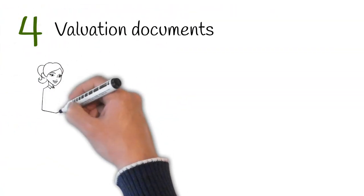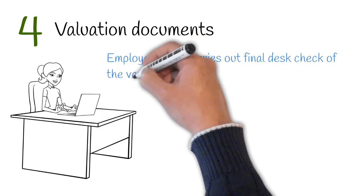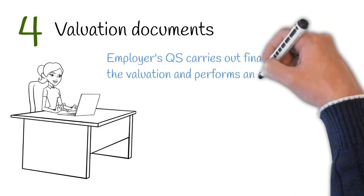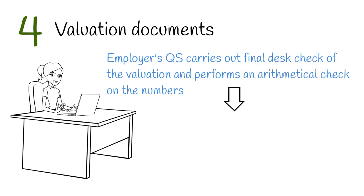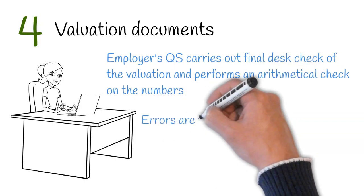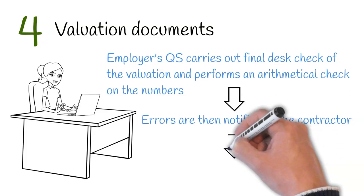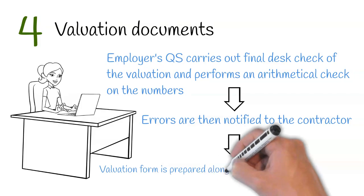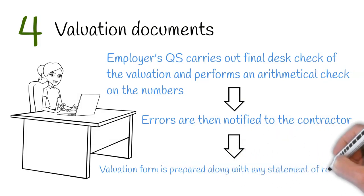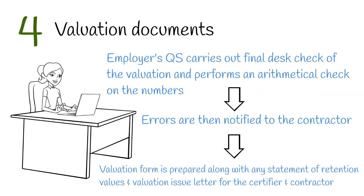Stage 4: Valuation Documents. This is where the employer's quantity surveyor will carry out a final desk check on the valuation and perform arithmetical checks. Any errors are then notified to the contractor. Once the employer's QS is content with the valuation, they will prepare the valuation form along with any statement of retention values, and prepare the valuation issue letter for the certifier and contractor.